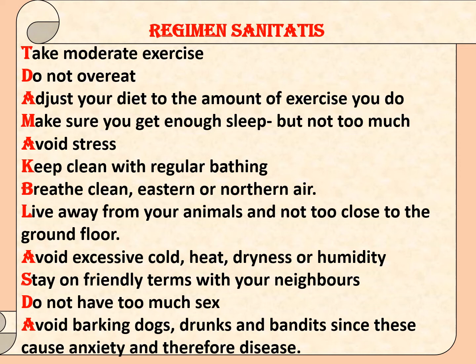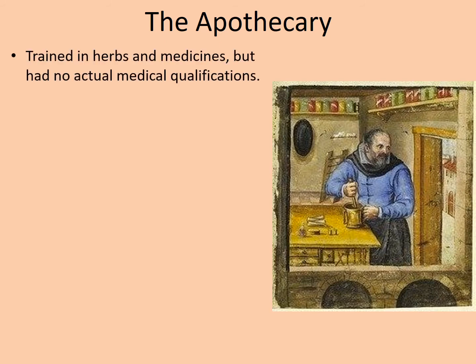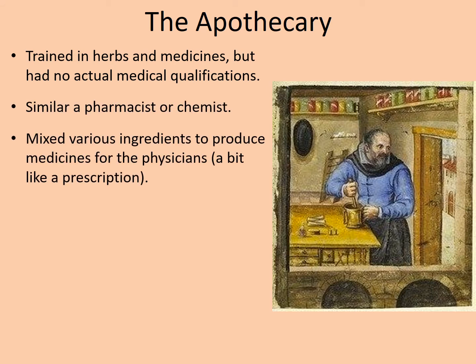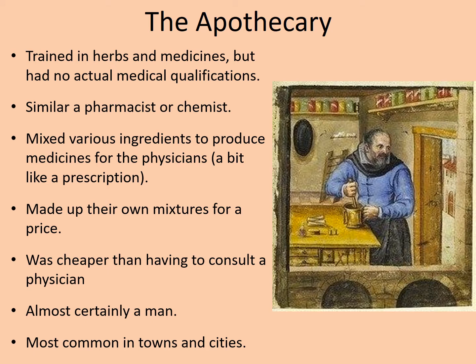I'm sure you'll agree there's plenty in there which we would probably take to heart today. Top trumps card number two: the apothecary. The apothecary is a little bit like a modern day pharmacist, only with far less training. They were trained in herbs and medicines but had no real medical qualifications — they tended to learn from books or from other apothecaries. They mixed various ingredients to produce medicines for the physicians, a bit like a prescription today. However, they also made up their own mixtures for a price. It was cheaper to see the apothecary than having to consult a physician, so it was slightly more affordable. They were almost certainly men, and most common in towns and cities. Most reasonable-sized towns would have had some sort of apothecary — where I live in Great Torrington, there's a street called Potacre Street, which originally meant apothecary street.